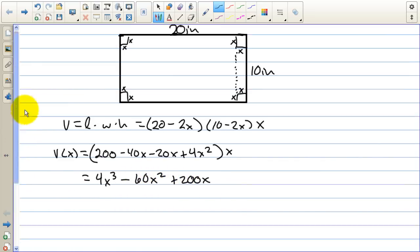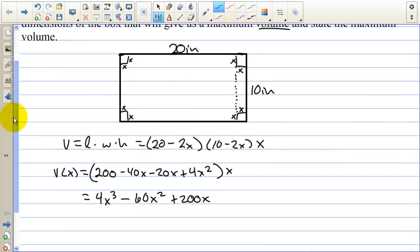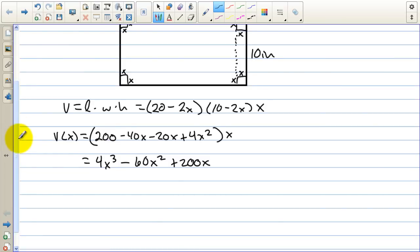And we are asked to find the maximum volume. Well, in order to maximize a function, to find the maximum value, we need to take the derivative and set it equal to zero. So we have v prime of x equals 12x squared minus 120x plus 200. I don't think you can factor this. We could take out a 2 at least.